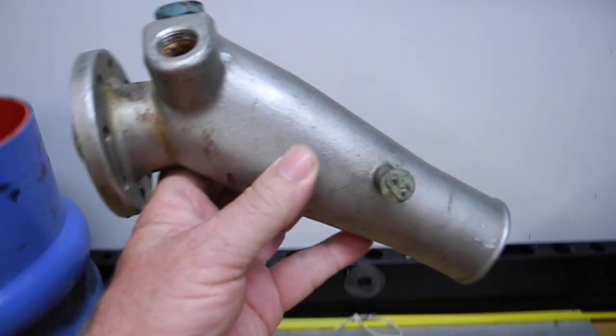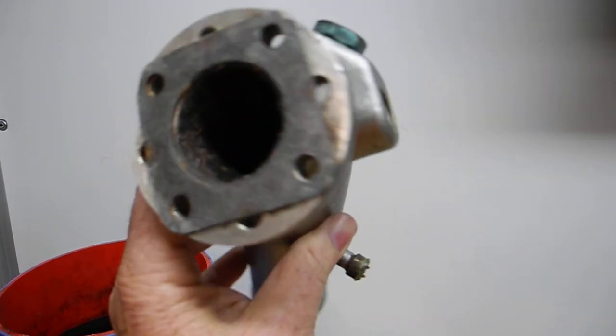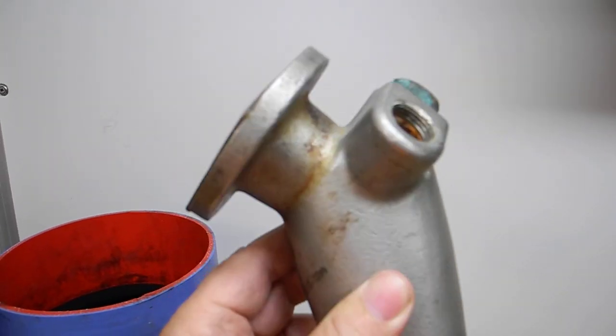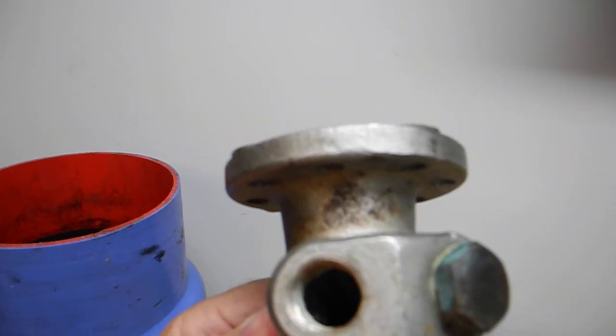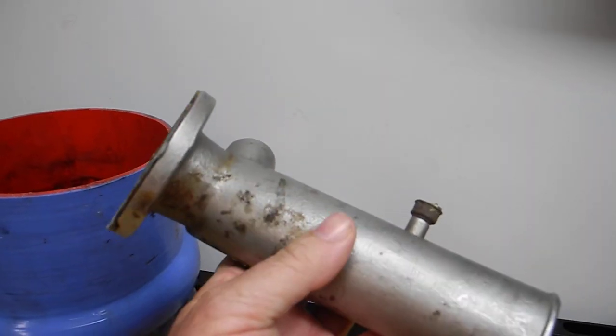This is an exhaust elbow coming off of a generator, a 12 kilowatt generator. You can see all the porosity corrosion right there. You think, well this is stainless steel, why should it rust? But it is.